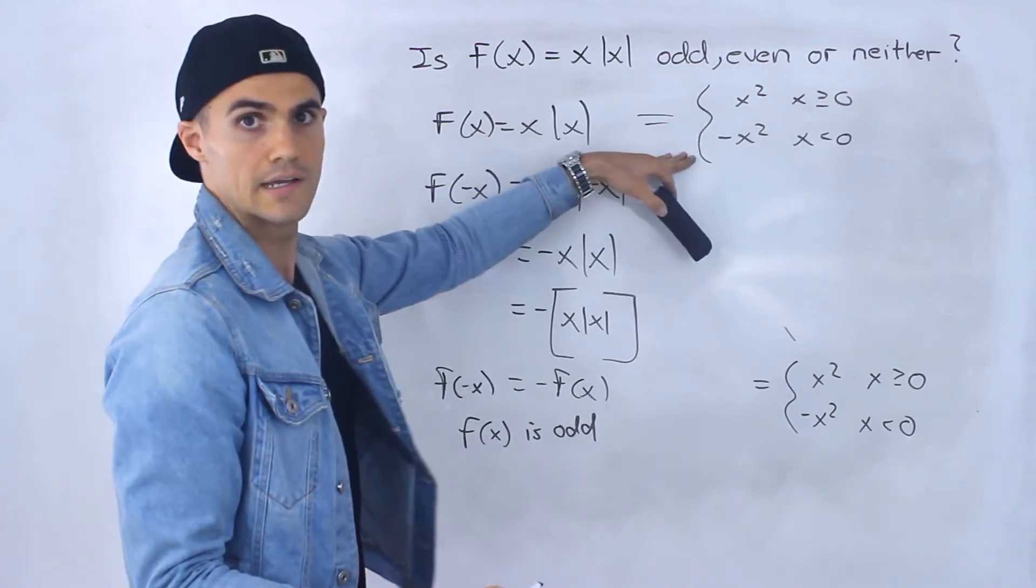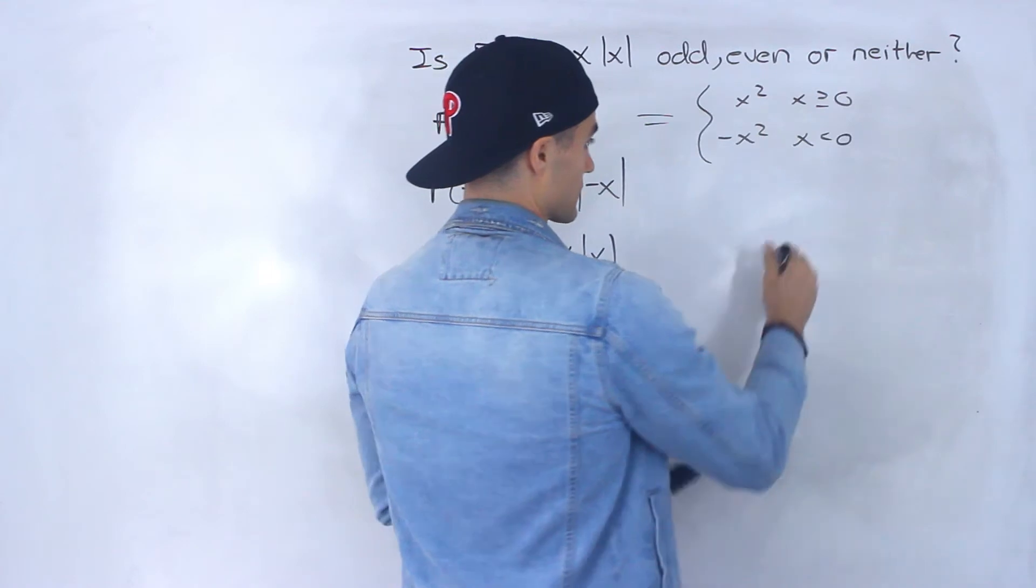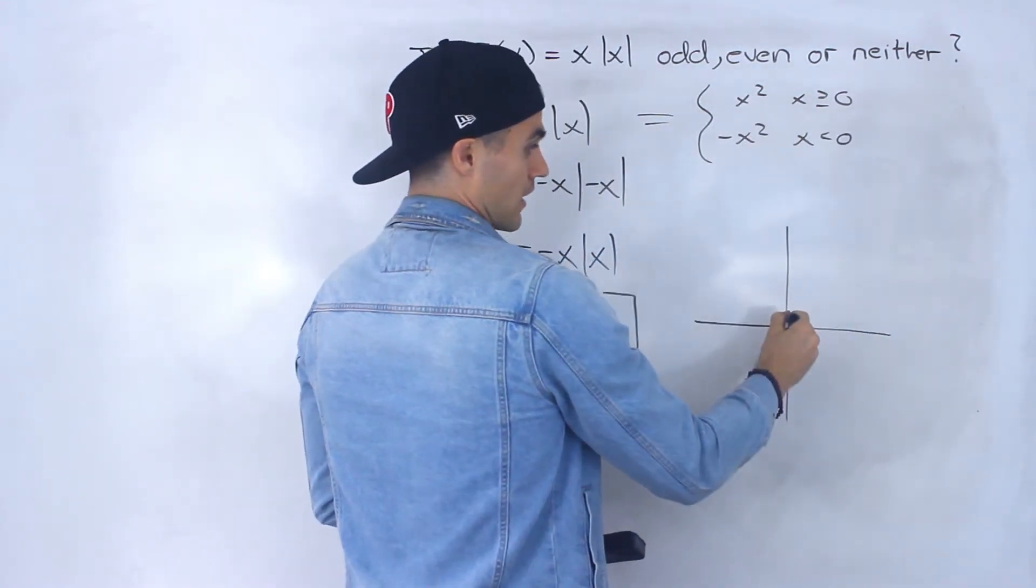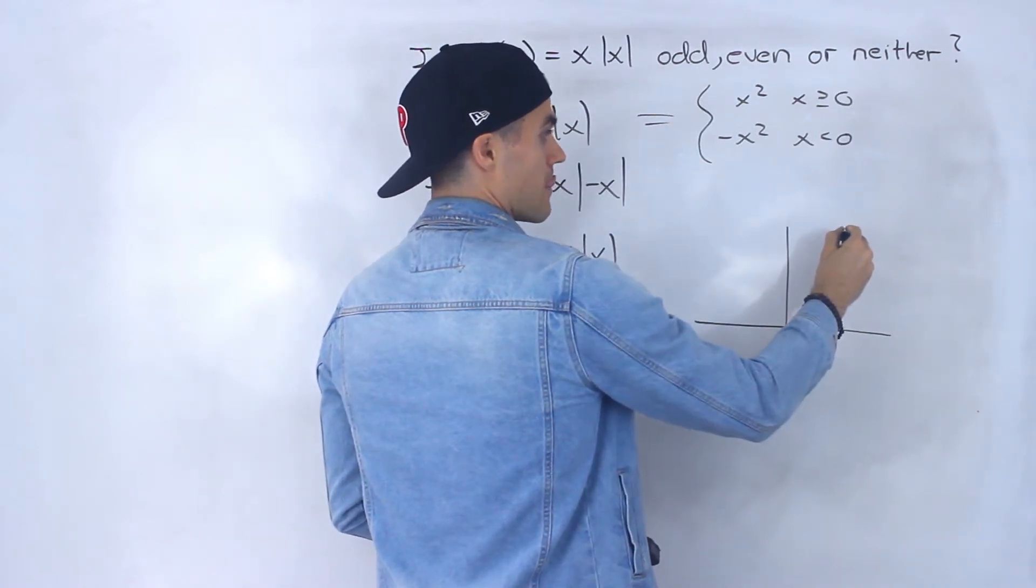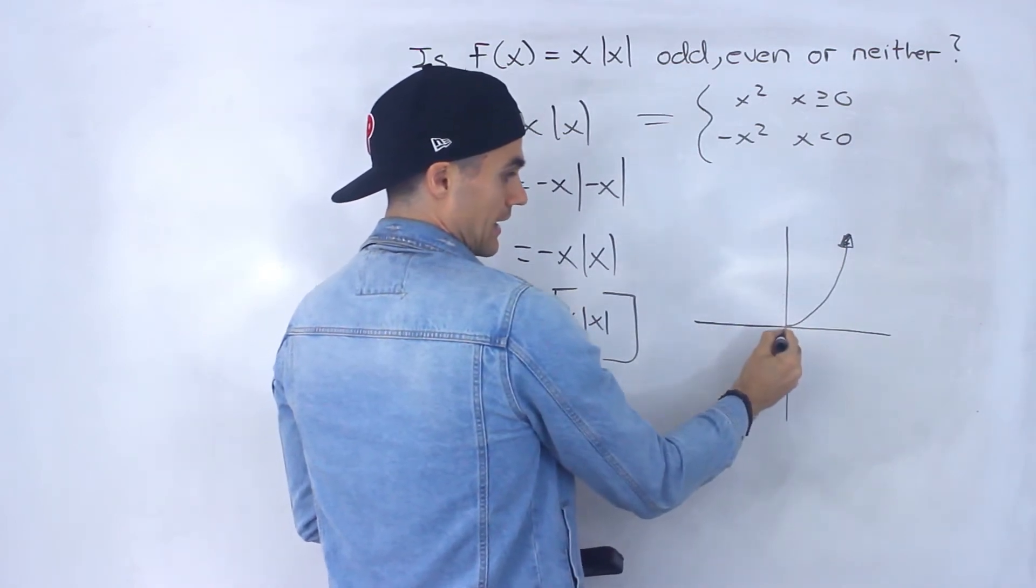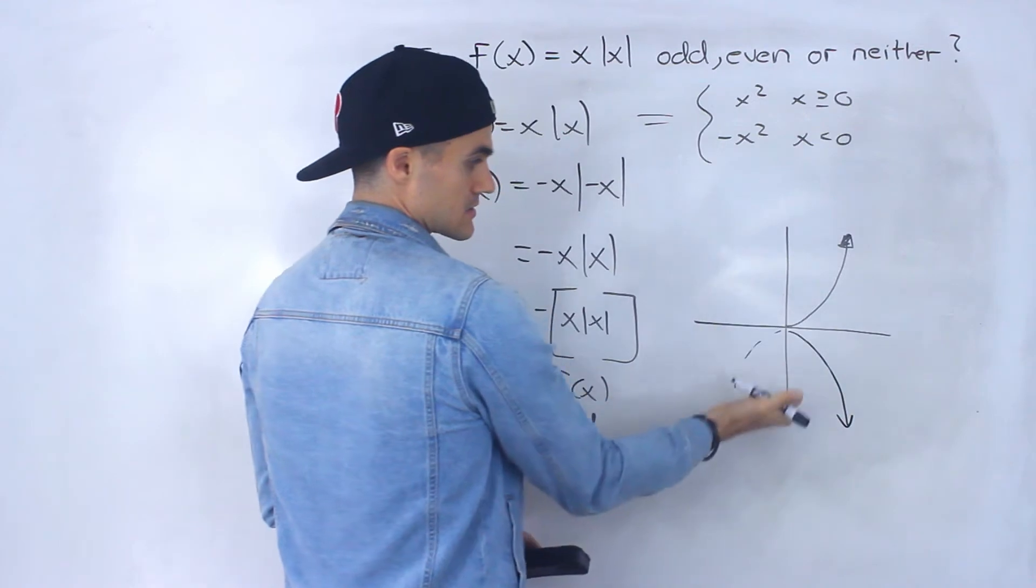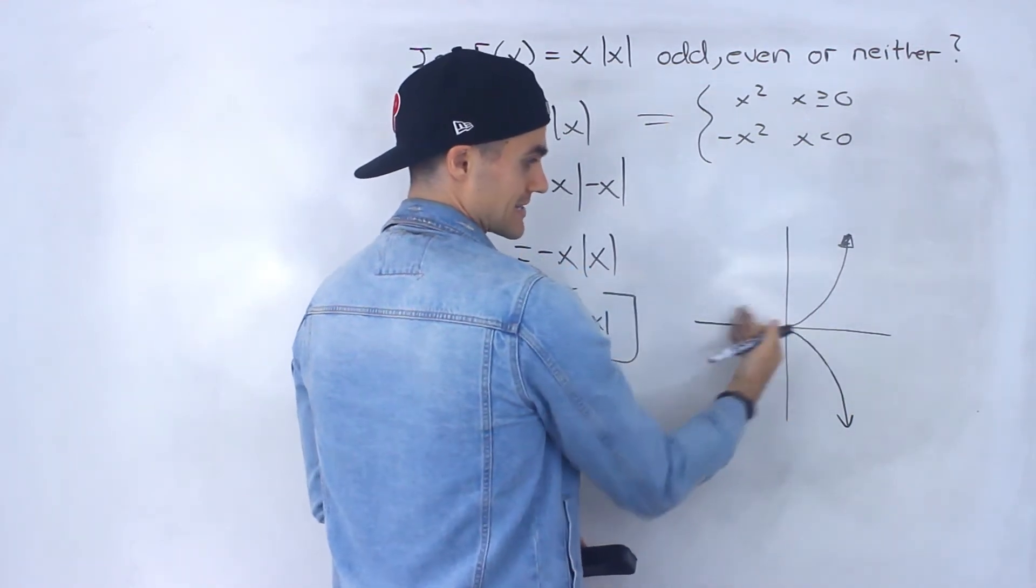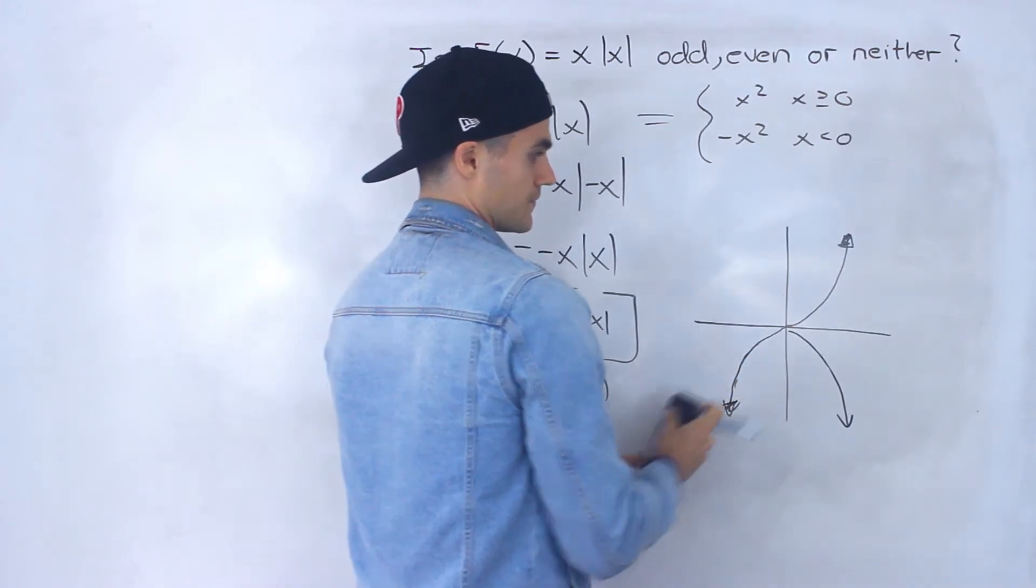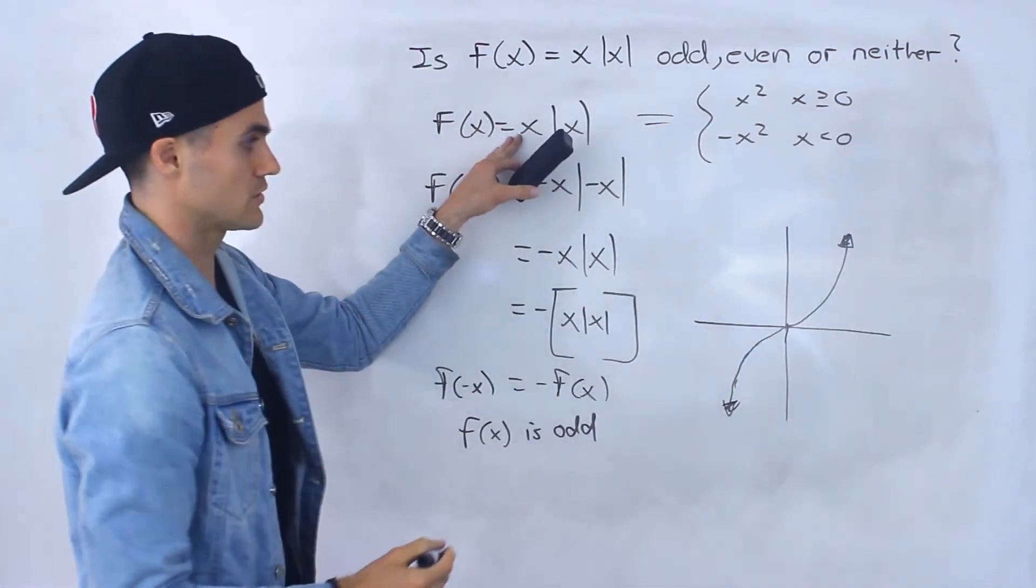Right, this function is the same as that piecewise function. And so if I graph that piecewise function, when x is greater than or equal to 0 it's x squared, which is like that. And then it's negative x squared when x is less than 0. And negative x squared is basically a parabola that's opening downwards, but it's only when x is less than 0. So we would only put this portion here. So that is how this function looks.